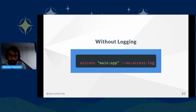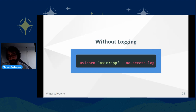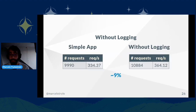Another thing you can do to improve performance — that I also do not recommend — is to remove access logging. If you remove the access logs using the no-access-log flag in the Uvicorn command, you are not able to see the HTTP logs anymore, and your application also improves a bit.